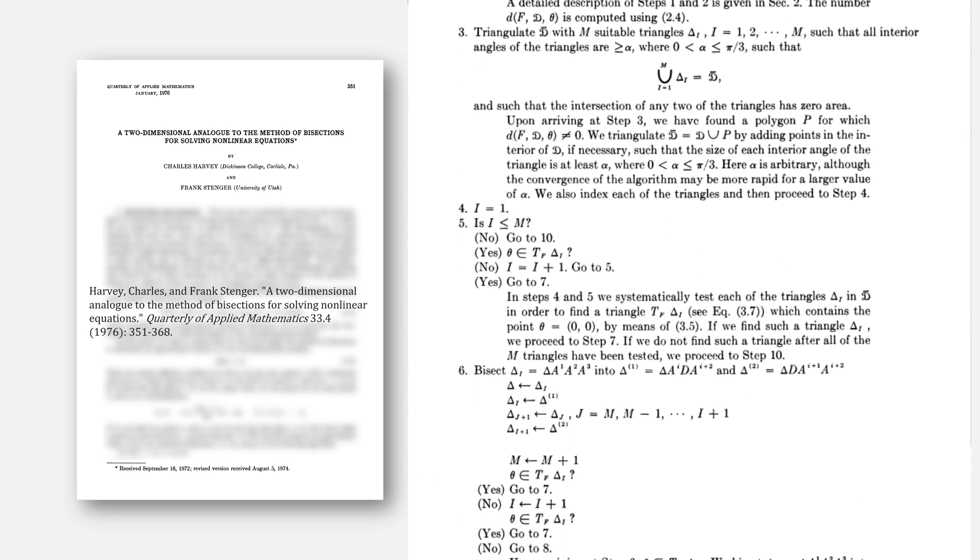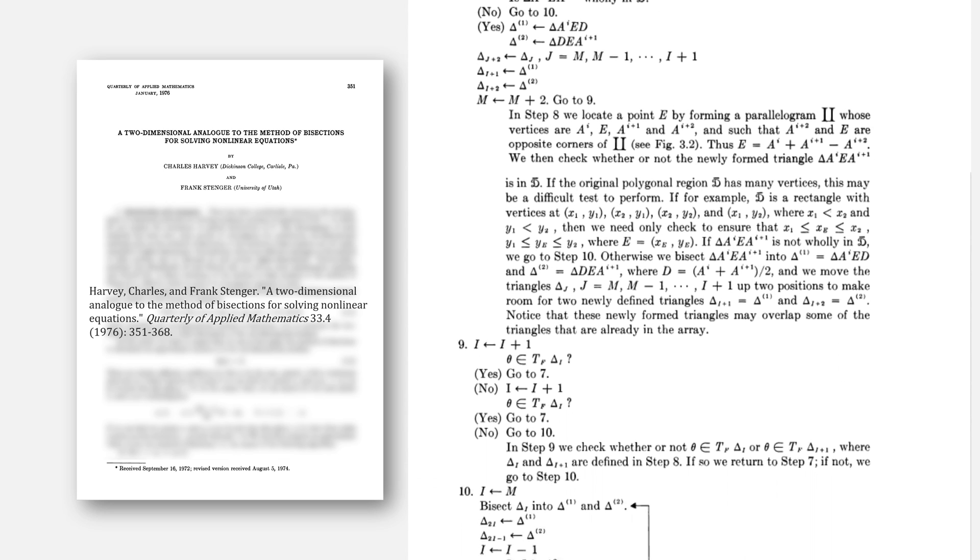You could have an alternate starting condition that says, pick a triangle that contains a solution, but that's harder to find than just four points with different signs. Going back to Harvey and Stenger's original paper, I mentioned that we covered a simplified version of their algorithm. Here's what their algorithm actually looks like. And you can imagine why we chose the simplified version.